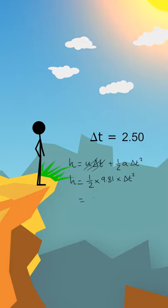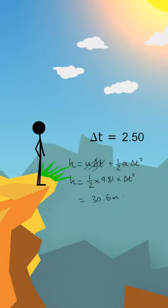Gives us 30.6 meters to one decimal place. And that is the height of the cliff.